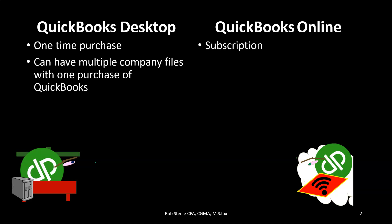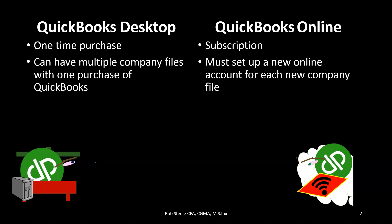You can have multiple company files with one purchase of QuickBooks desktop. On the online version, if you want different company files, you have to set up another QuickBooks account or file, which could cost extra each time. This is a huge benefit on the desktop side — you can have multiple company files and test things out with a second file. When working on practice problems, we can use multiple files, just like having multiple files in Microsoft Excel or Word, where the software is the software and the files are separate.